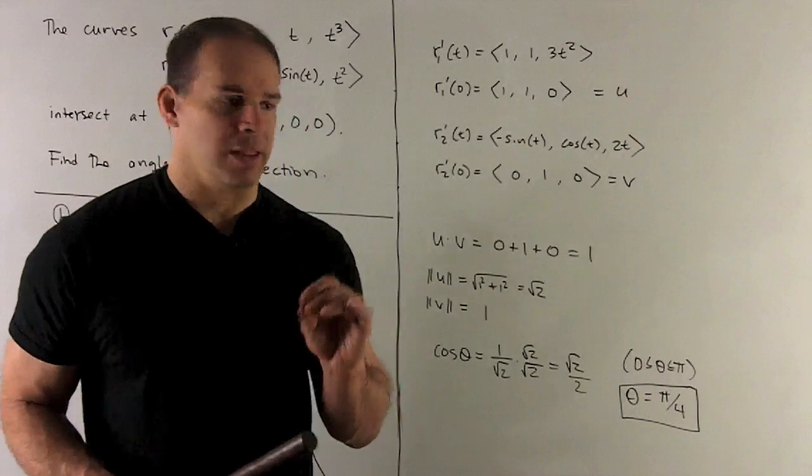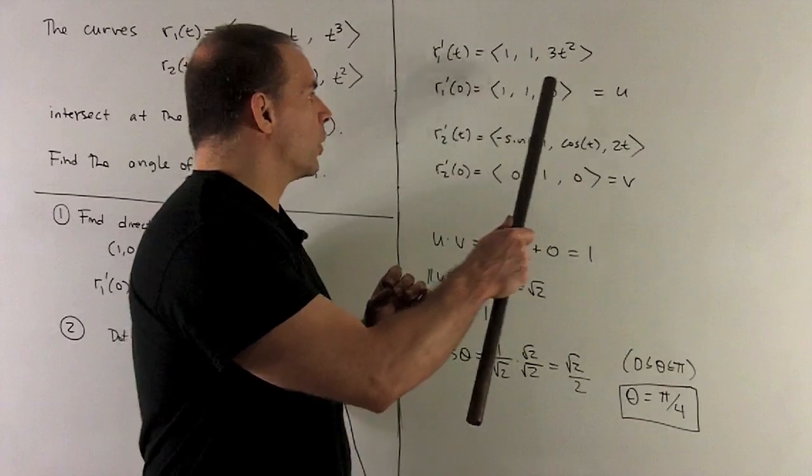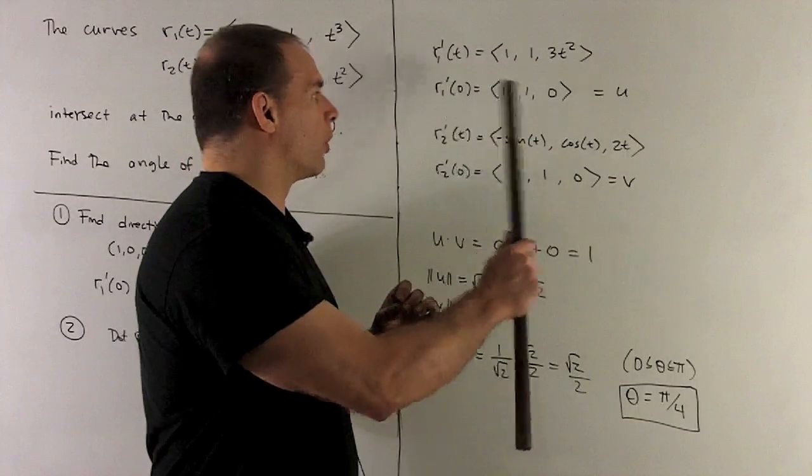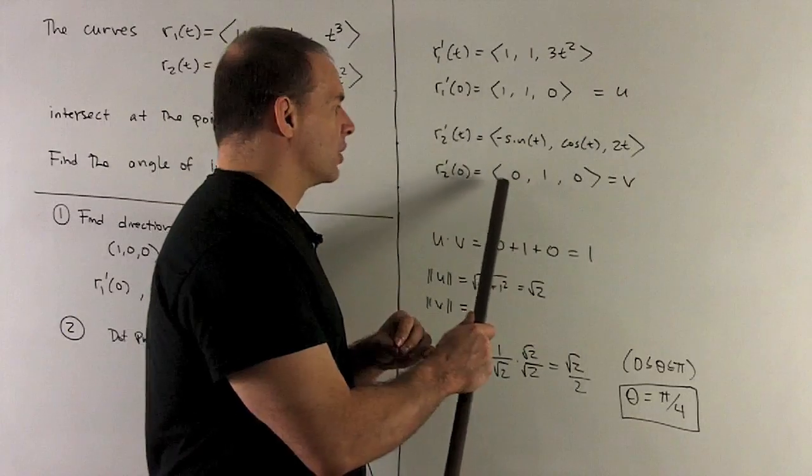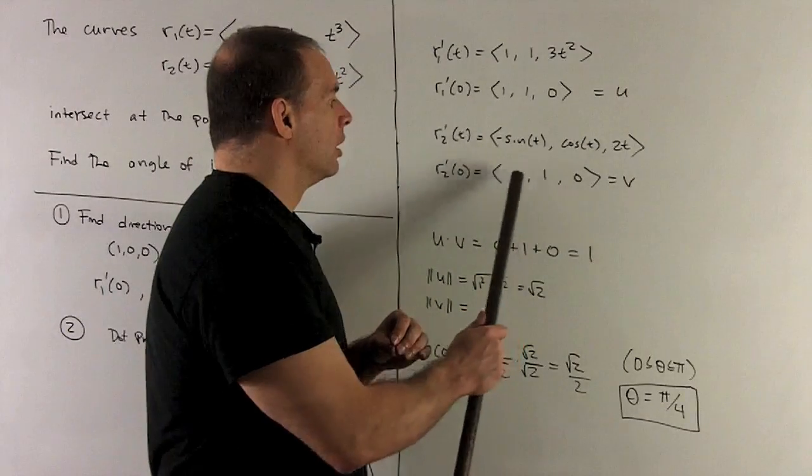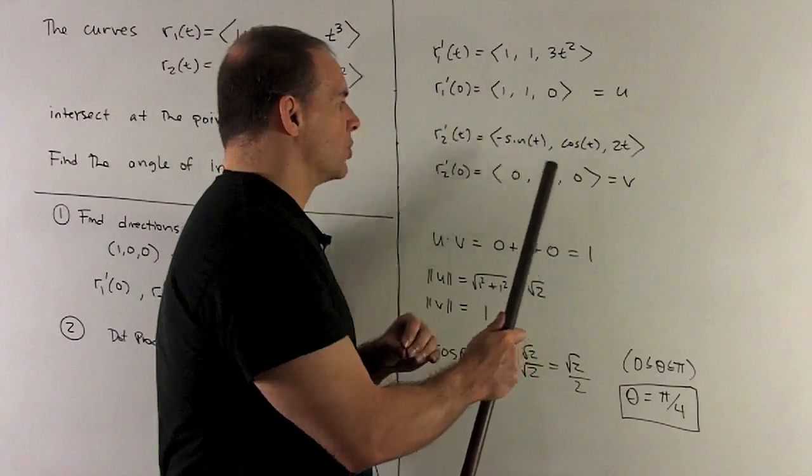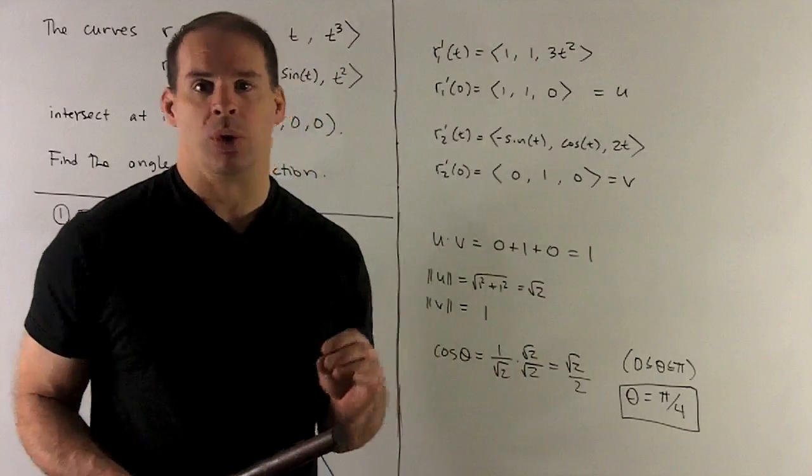So the length of u, we're going to get 1 squared, 1 squared, 0 squared, sum them, square root. So that'll be square root of 2. And then the length of v is going to be 0 squared, 1 squared, 0 squared, sum them, square root. We get a 1.